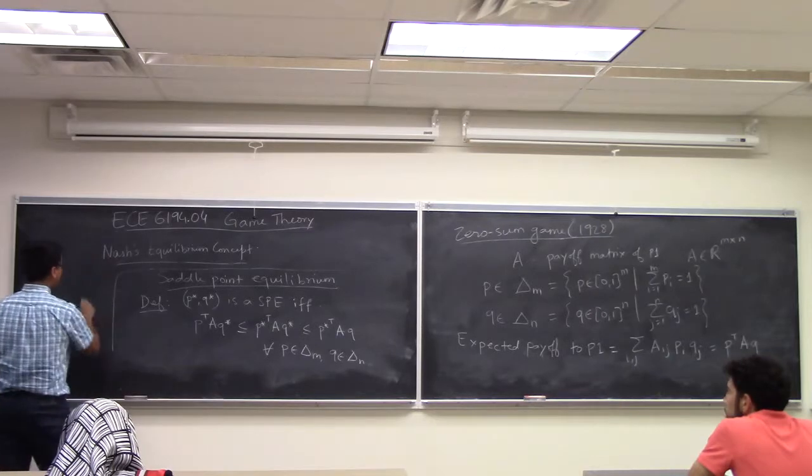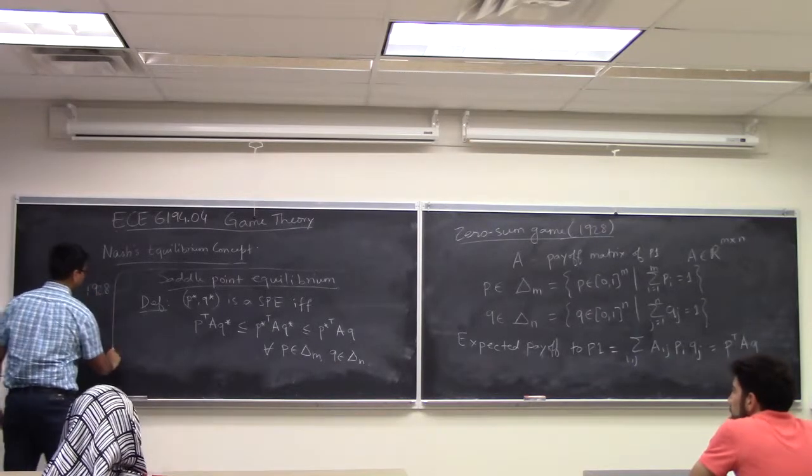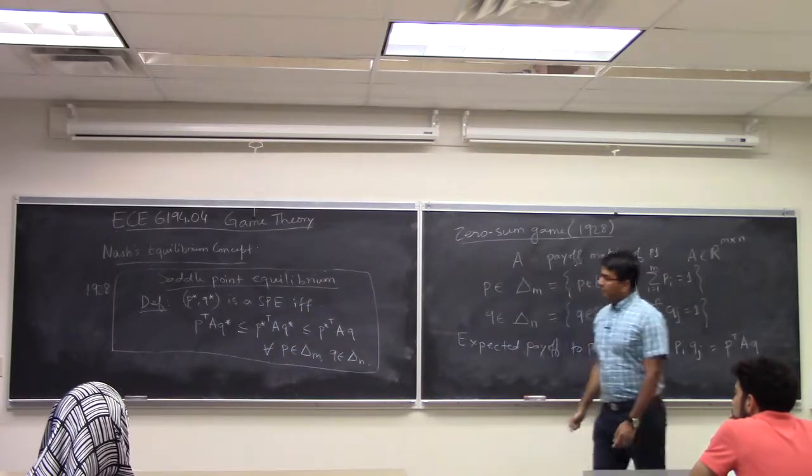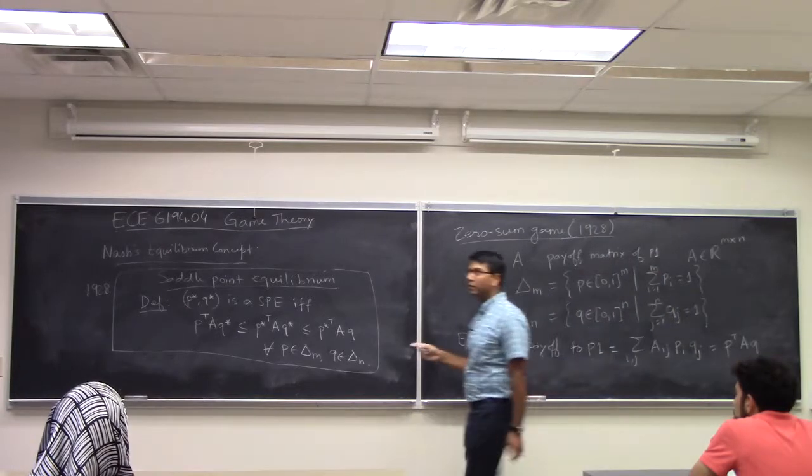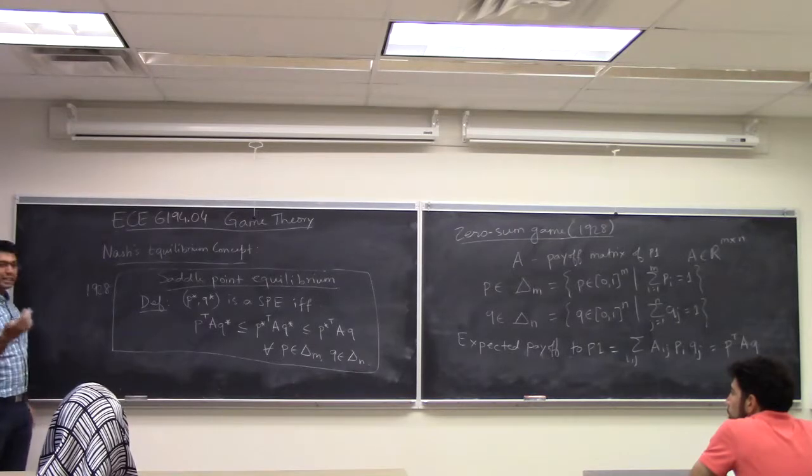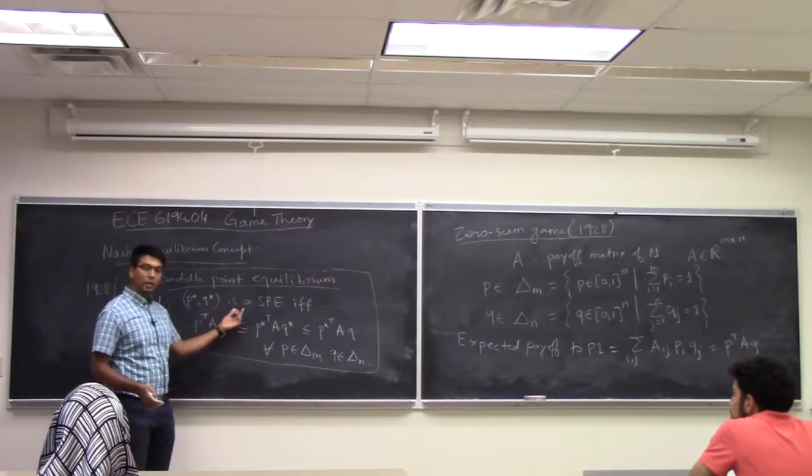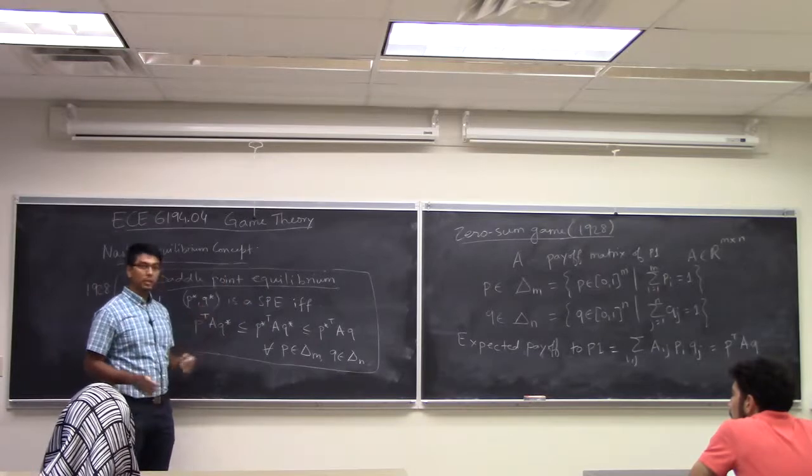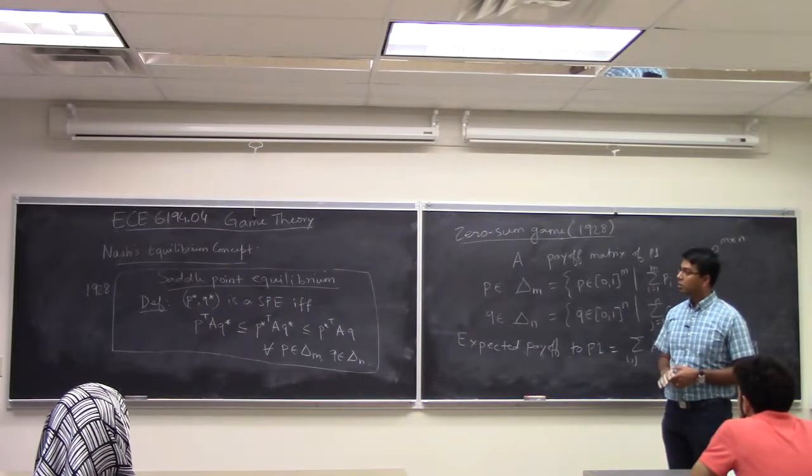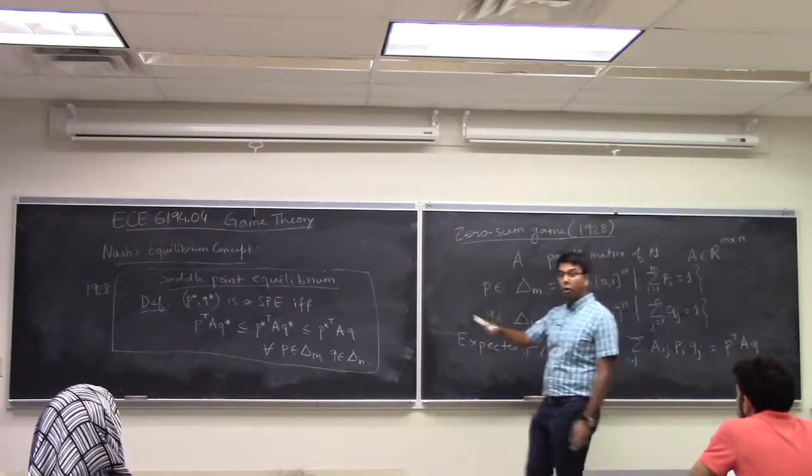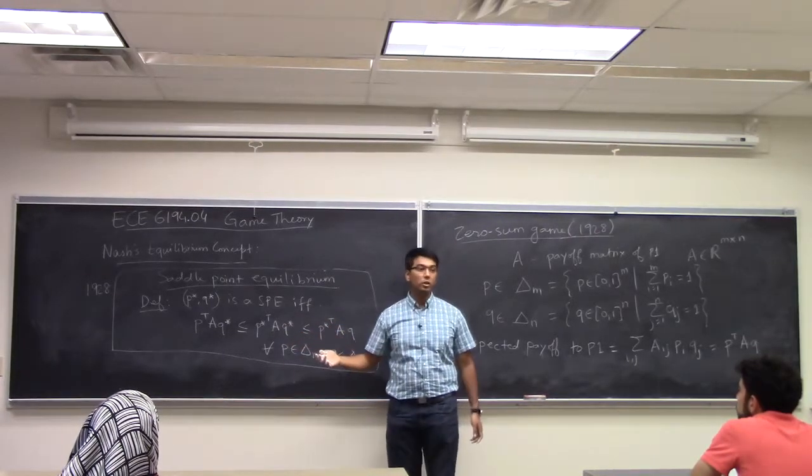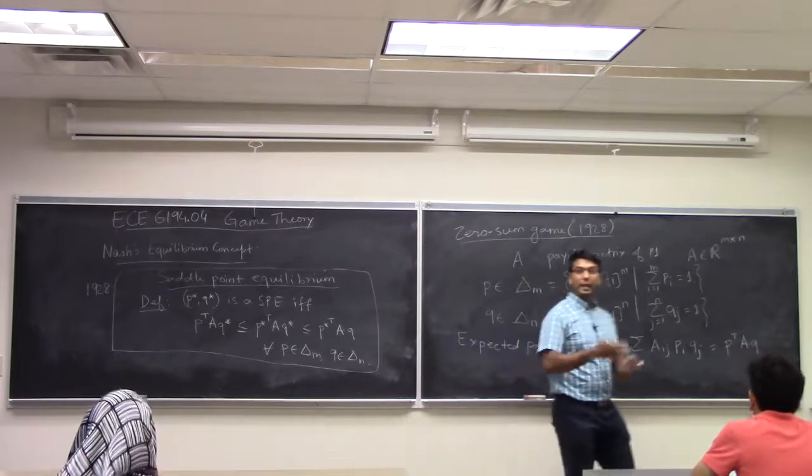So this is again 1928. And for the next 22 years, 23 years, we didn't really know what the right equilibrium concept for non-zero-sum games is going to be. So we struggled for 23 years to figure out what happens in non-zero-sum game. Because you can't define a saddle point equilibrium. Because the payoff to one player is not equal to the cost to the other player. They can have different payoffs.